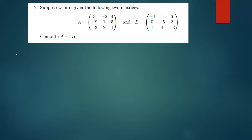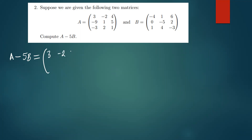We have to subtract 5B from A. This means we first have to work out what 5B is. We've been given matrix B, so we need to find 5B — in other words, we're multiplying 5 times B. So A minus 5B is the same as writing matrix A, which is [3, -2, 4; -9, 1, 5; -3, 2, 1], minus 5 times matrix B.